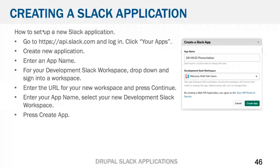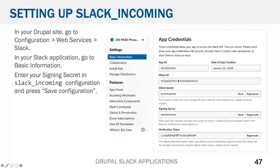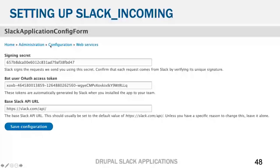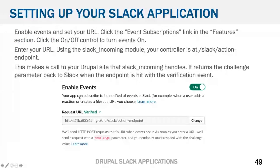Now in order to set up the app — don't worry about these keys and whatever, there's nothing here to worry about hacking; I've already torn down the application we used to screenshot these and I'm going to be tearing down the demo application. So what we care about here is this signing secret. We have a configuration form: go to config > web services > slack incoming, put in your signing secret, put in your OAuth token, and if there's any requirement to change the Slack API URL we can, but I don't see a reason why you would.